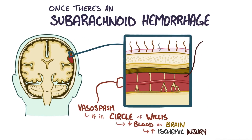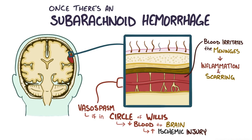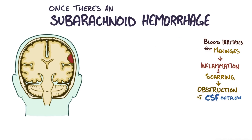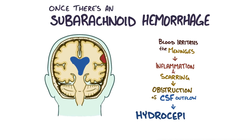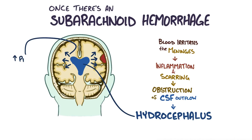Over time, blood in the subarachnoid space can irritate the meninges and cause inflammation, which leads to scarring of the surrounding tissue. The scarring tissue can obstruct the normal outflow of cerebrospinal fluid, causing that fluid to build up and dilate the ventricles at the center of the brain. This is referred to as hydrocephalus. As the ventricles dilate, there's also increased intracranial pressure, which compresses the brain tissue.